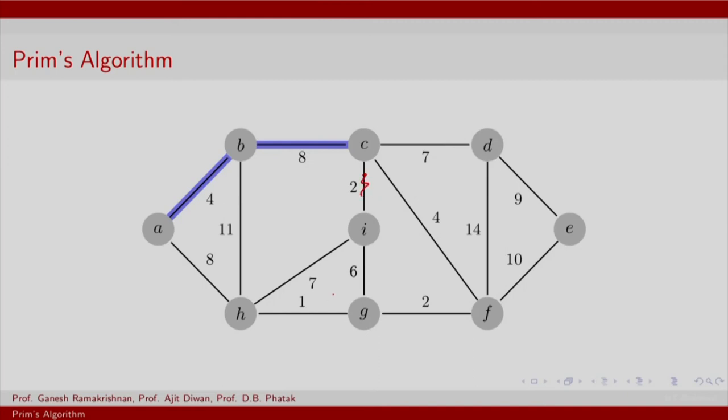We can update the key for i, we can update the key for d and for f. Now, amongst all the new keys and the old keys, we find that i should be picked next. That is what is done. Again you update the keys for other nodes connected to i, and we find that in the next iteration it makes sense to include f. We go ahead and again update keys. G has a new key and looks like g should be picked up next. Again you update keys—certainly h can be picked up next.